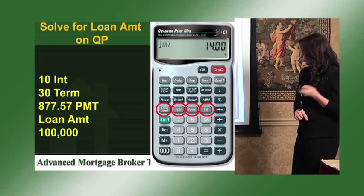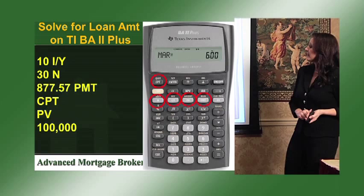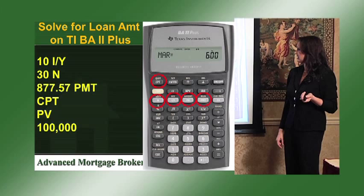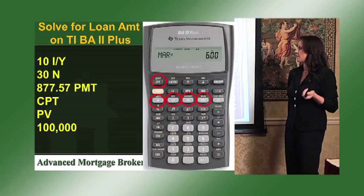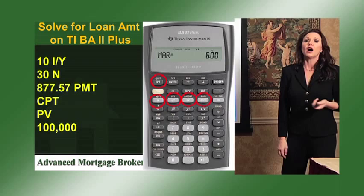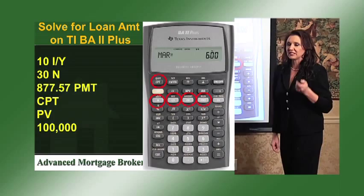Same formula on the BA2 Plus: enter 10 IY, then 30 term which is N, then $877.57 payment. Now hit Compute — remember the Compute key at the top — then hit Present Value, and that's going to give you an answer of $100,000. This is when you know what the payment is but need to know what loan amount that payment corresponds to.